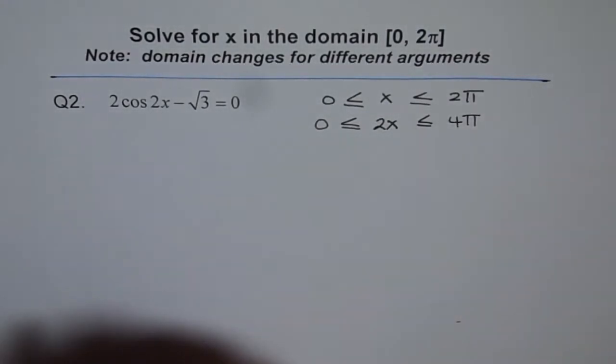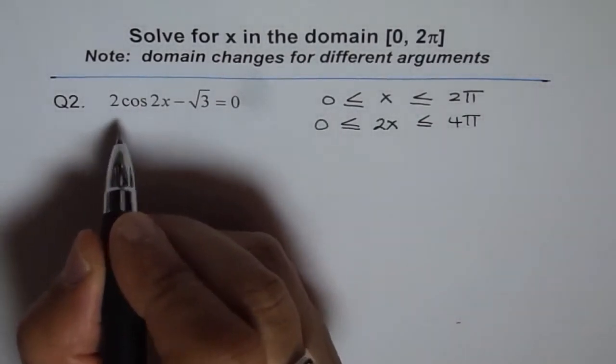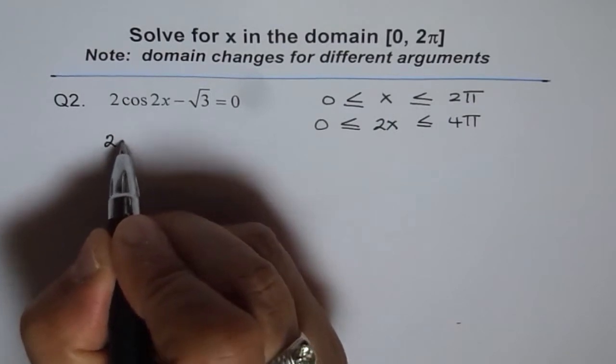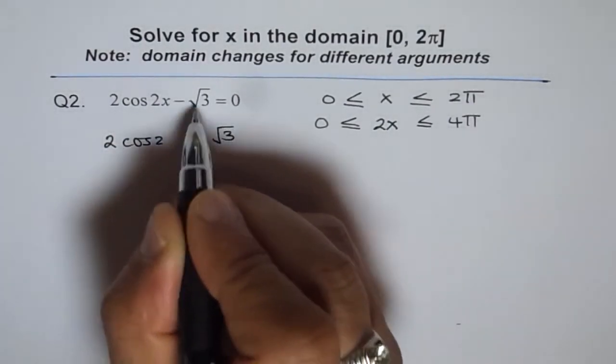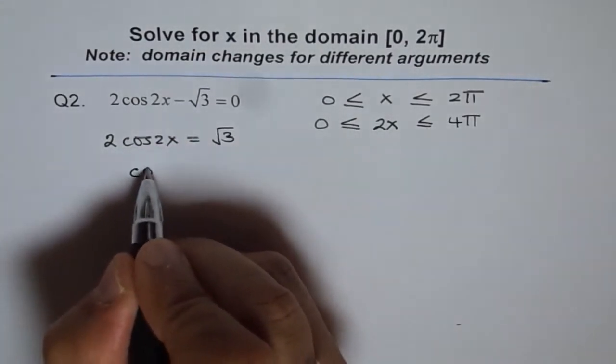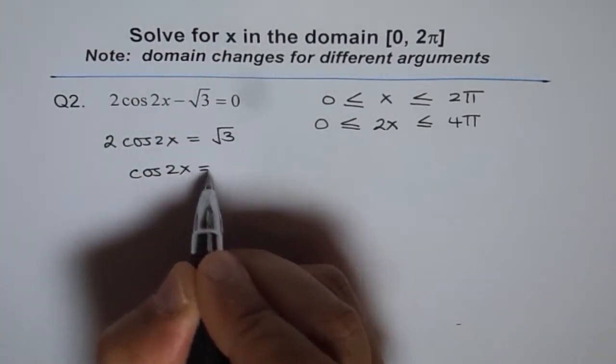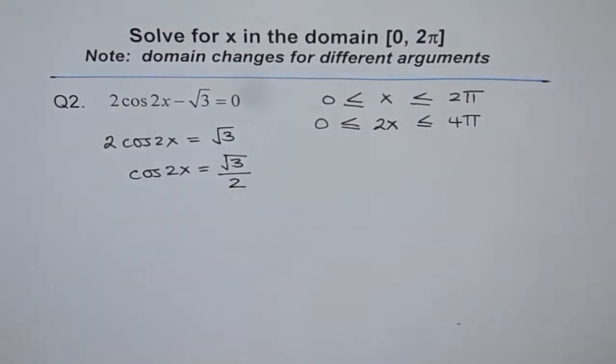Otherwise, the question is very simple. Now let's try to solve it. So we get 2 cos 2x equals to square root of 3. We can take it on the right side, and then we have cos 2x equals to square root of 3 over 2. Perfect.